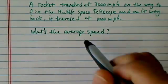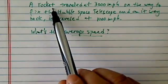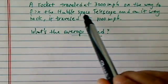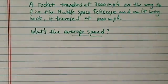We have an interesting problem here. We're asked to find the average speed. The story says a rocket traveled at 3,000 miles per hour on the way to fix Hubble Space Telescope and on its way back it traveled 1,000 miles per hour.